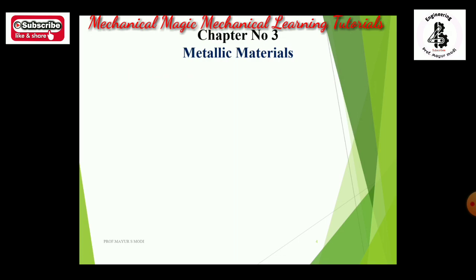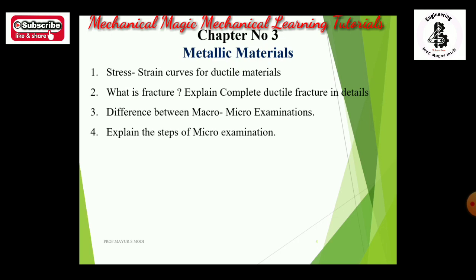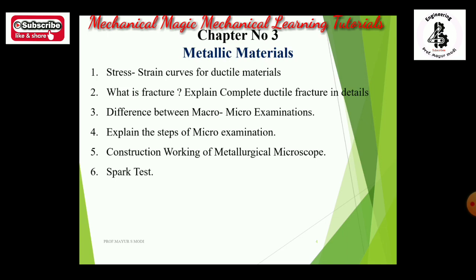Chapter 3 is metallic materials. Topics include: stress-strain curve for ductile materials; what is fracture — explain complete ductile fracture in detail for 4 marks; difference between macro and micro examination for 4 marks; explain the steps of micro examination or sample preparation for micro examination for 7 marks — maximum possibility for this theory; construction and working of the metallurgical microscope for 7 marks — good chance; and spark test for 4 marks.